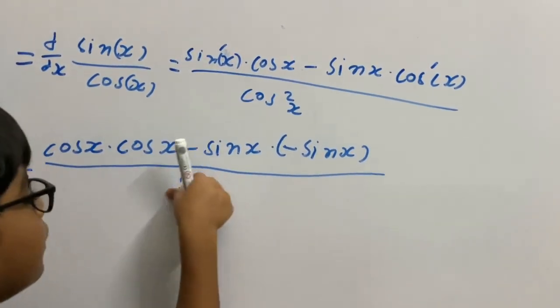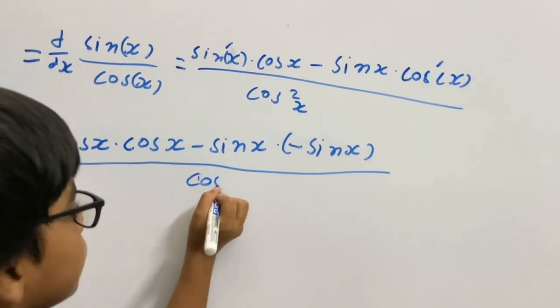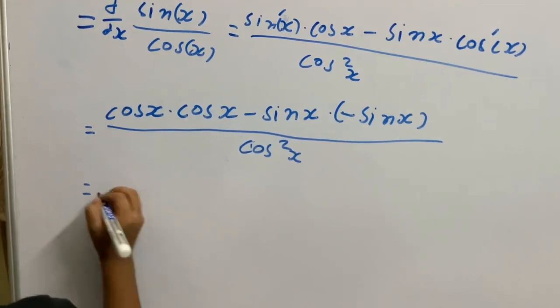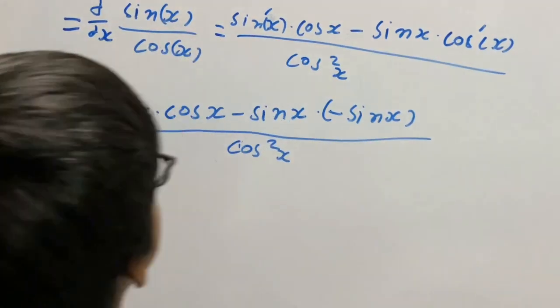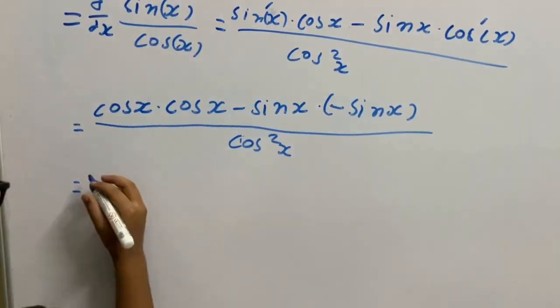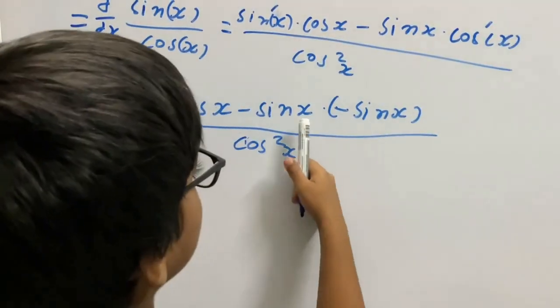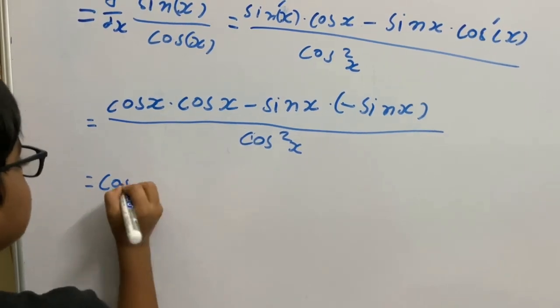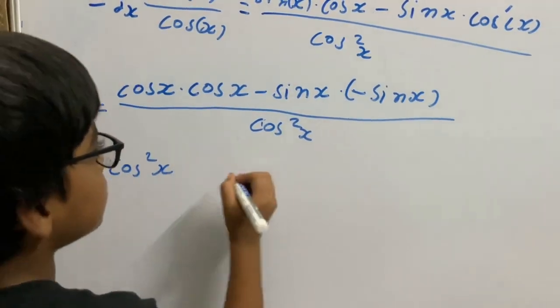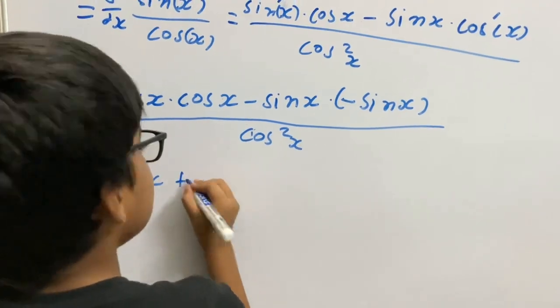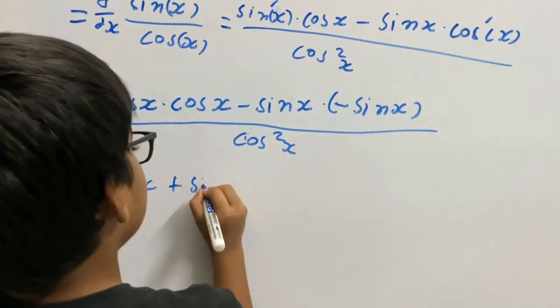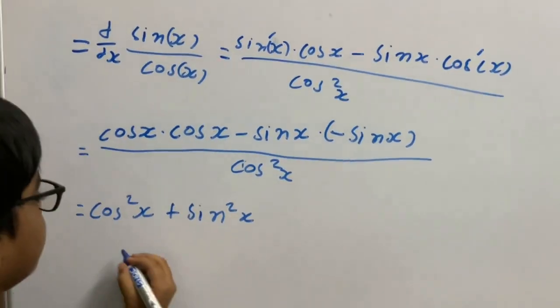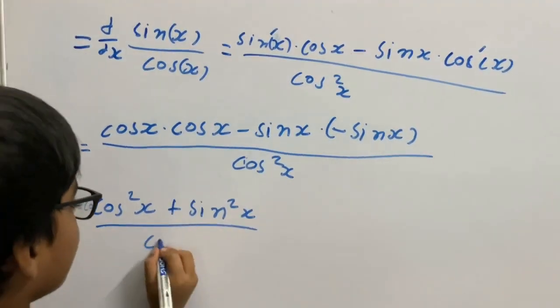We can cancel the negatives. This is cos squared x, and this becomes sin squared x, so cos squared x plus sin squared x, divided by cos squared x.